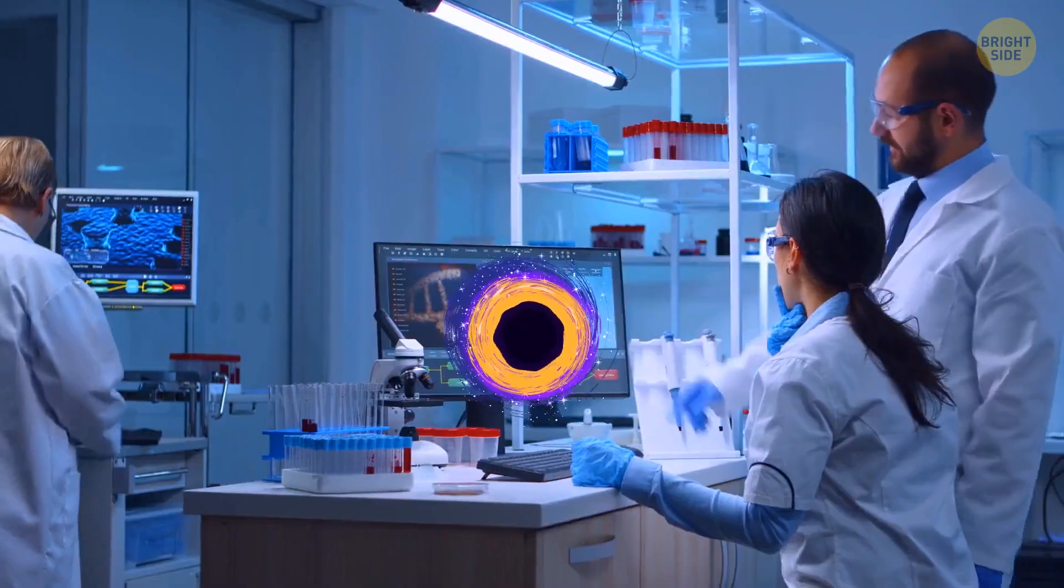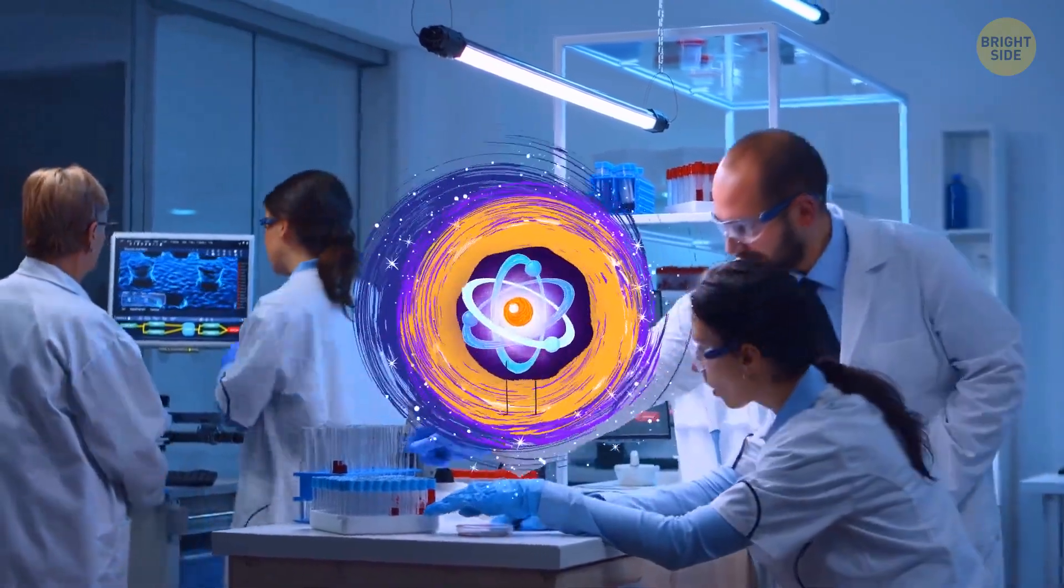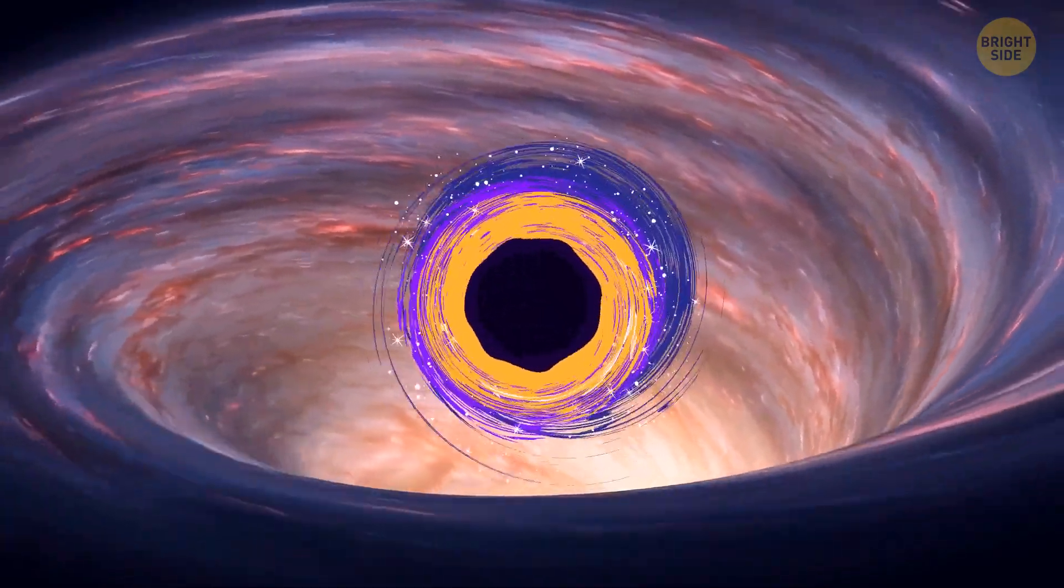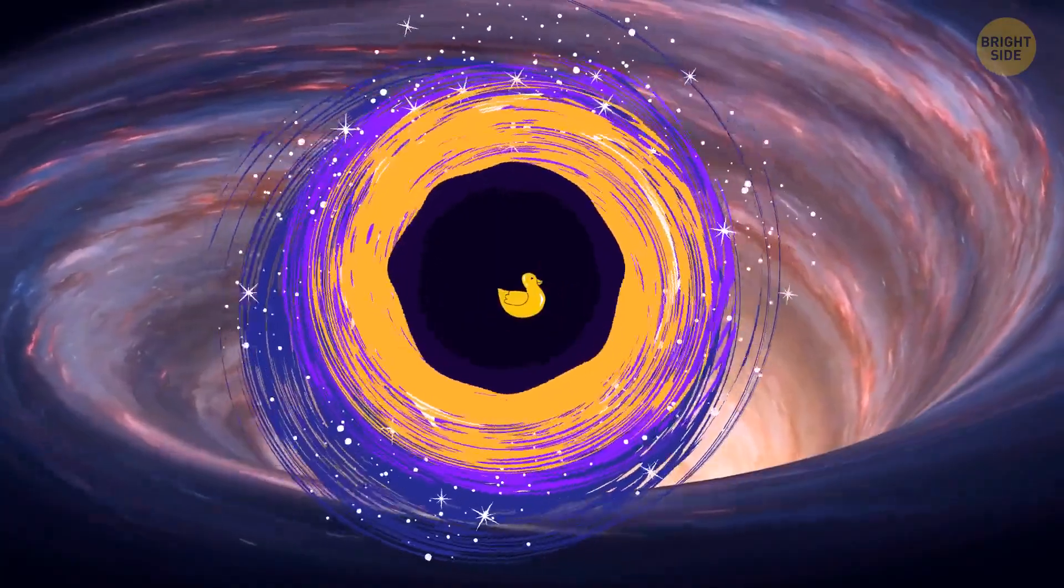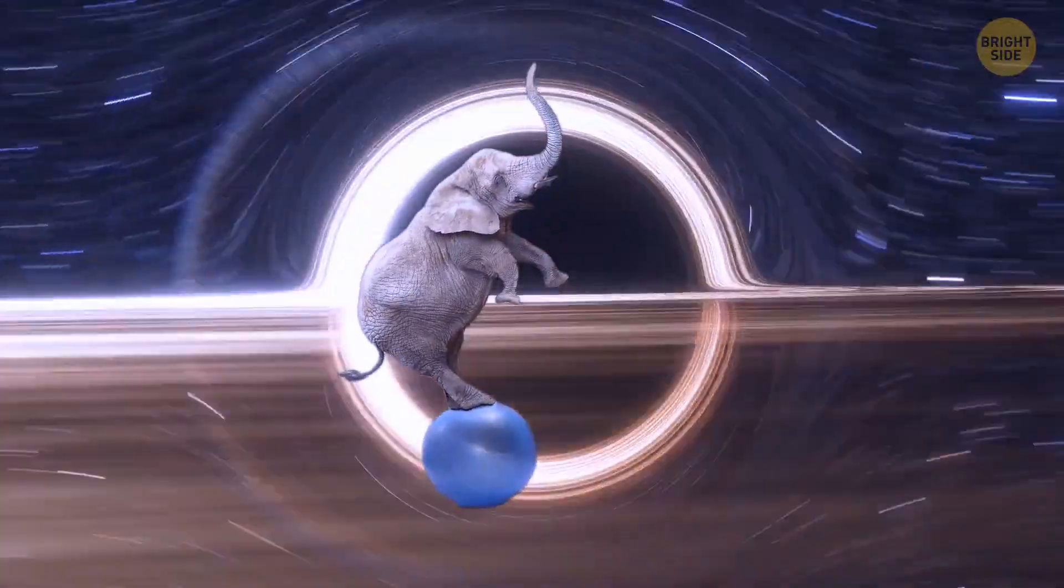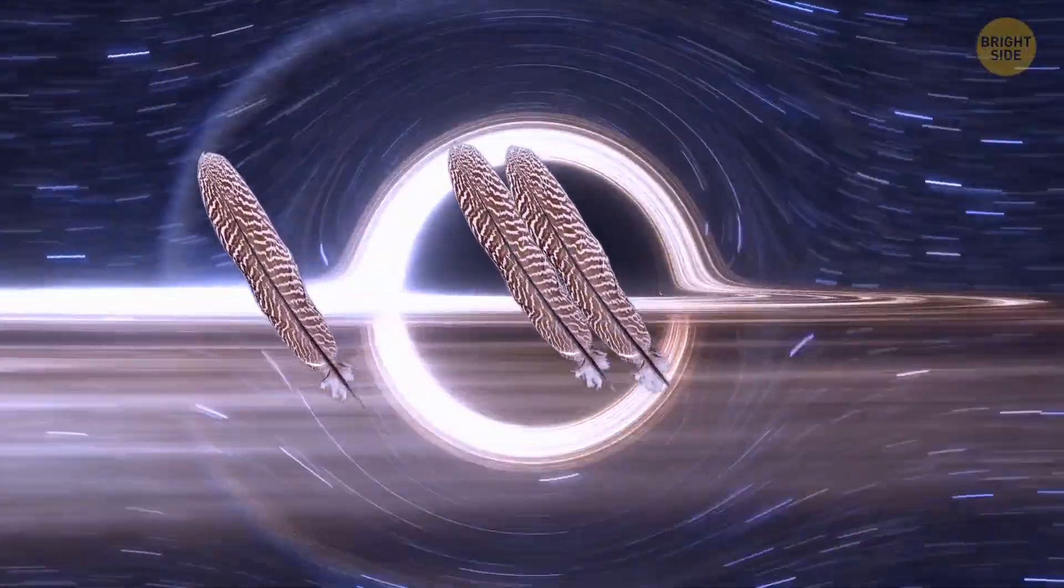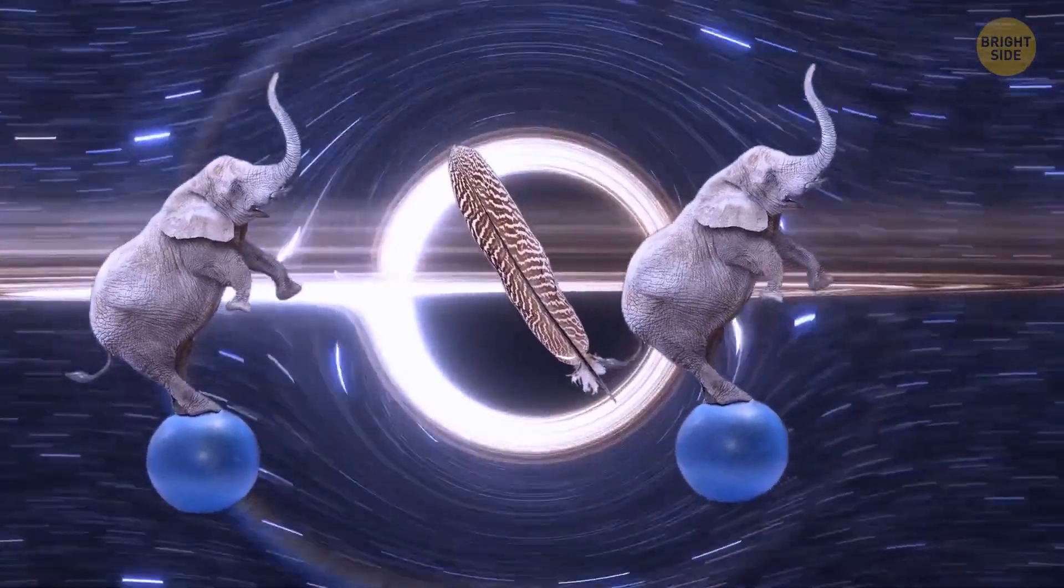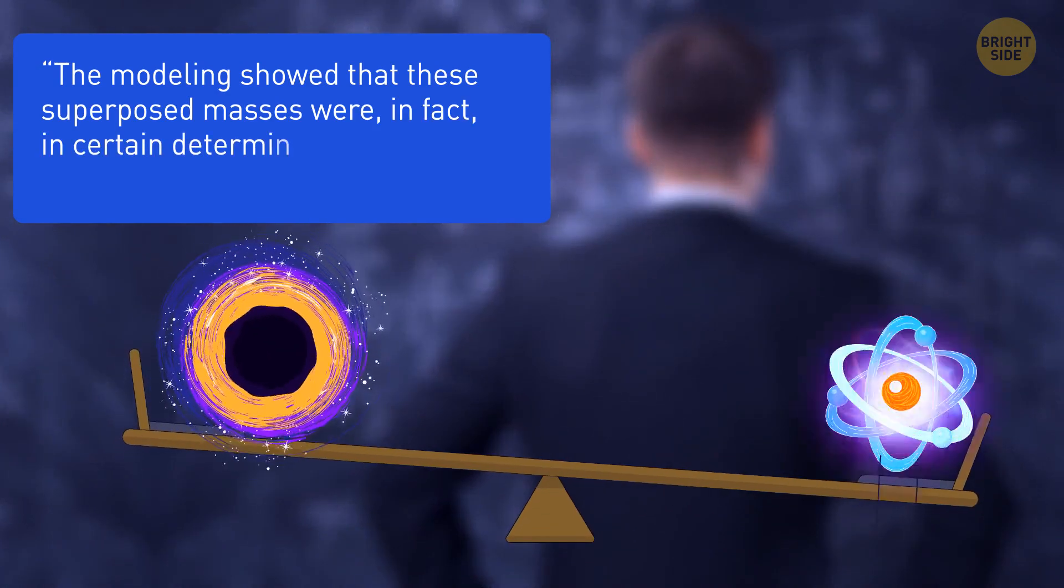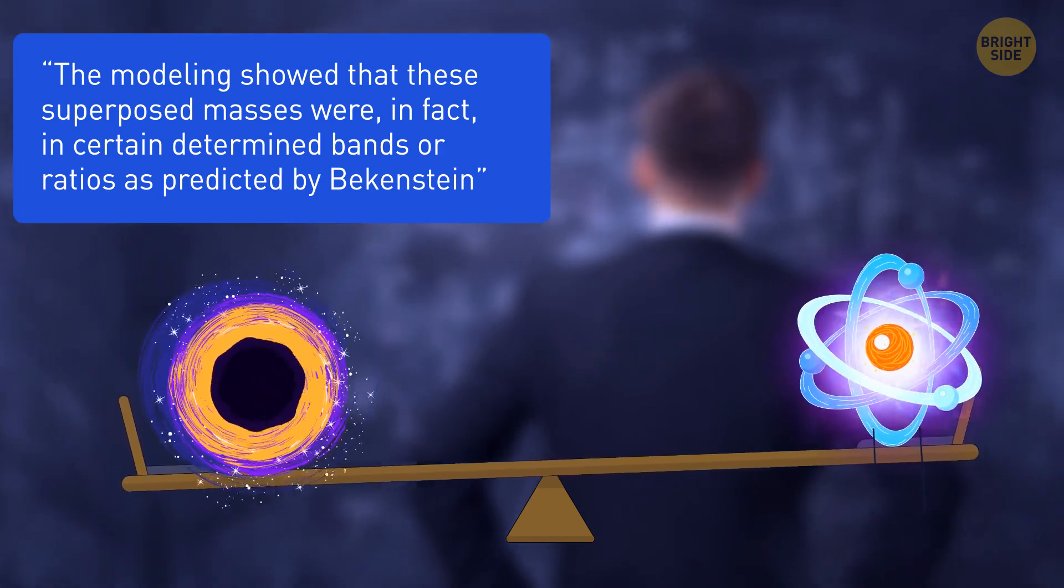The research itself was aimed at finding a connection between quantum particles and black holes. The researchers created a computer structure in which they placed a simulated quantum particle directly outside a giant simulated black hole. And in the end, this analysis showed that, yep, black holes could also exist in several states at once. For example, they can be incredibly massive and at the same time have no mass at all. And each of these mysterious space gates can have several masses at the same time. The modeling showed that these superimposed masses were in fact in certain determined bands or ratios, as predicted by Bakkenstein, said the physicist Magdalena Zych, referring to the study.